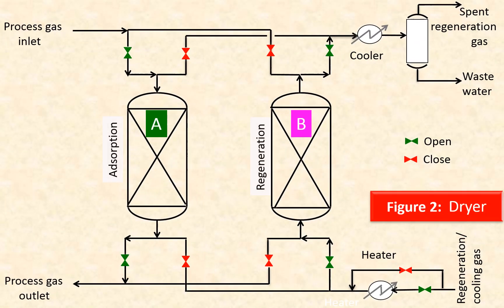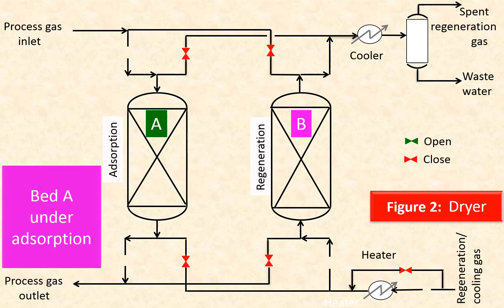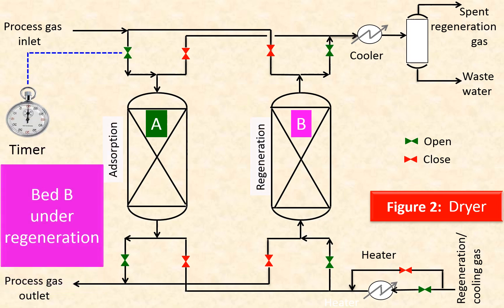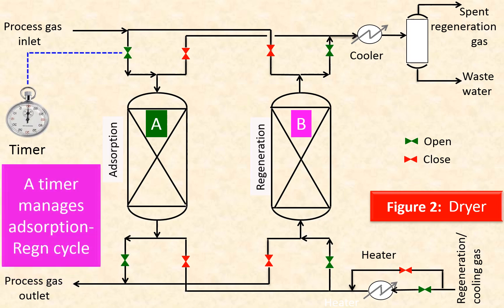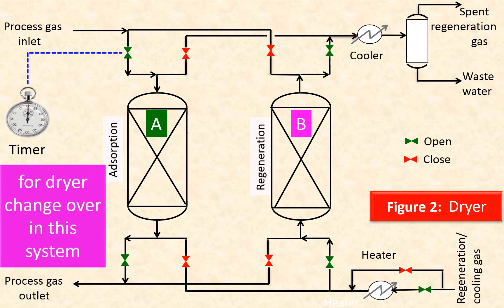This diagram shows a timer-based temperature swing adsorption tower. Bed A is under adsorption and bed B is under regeneration. A timer manages the adsorption-regeneration cycle. Which types of valves are selected for dry changeover in this system?